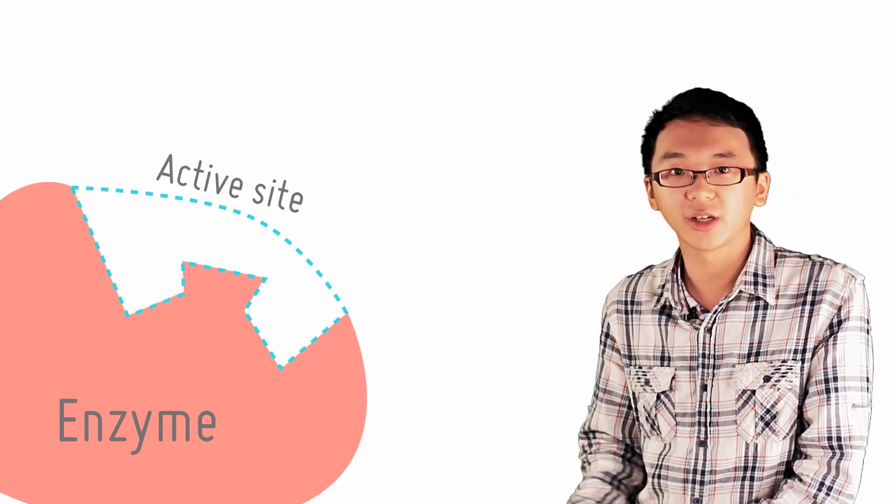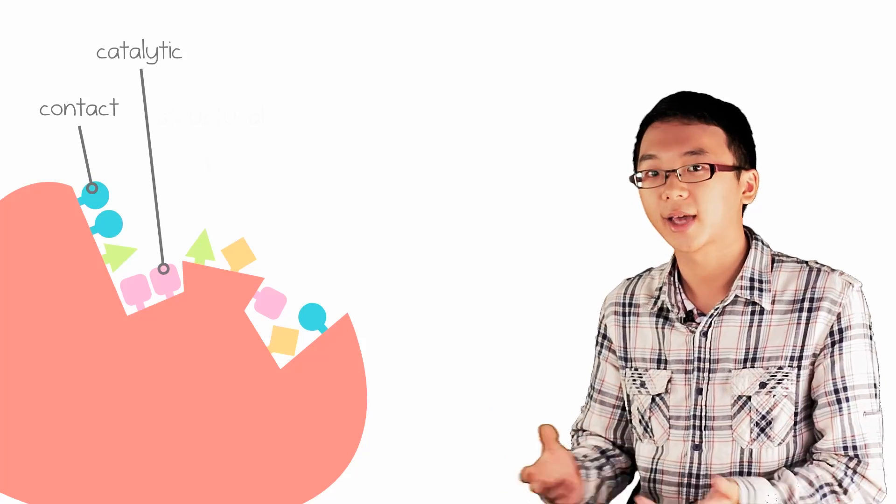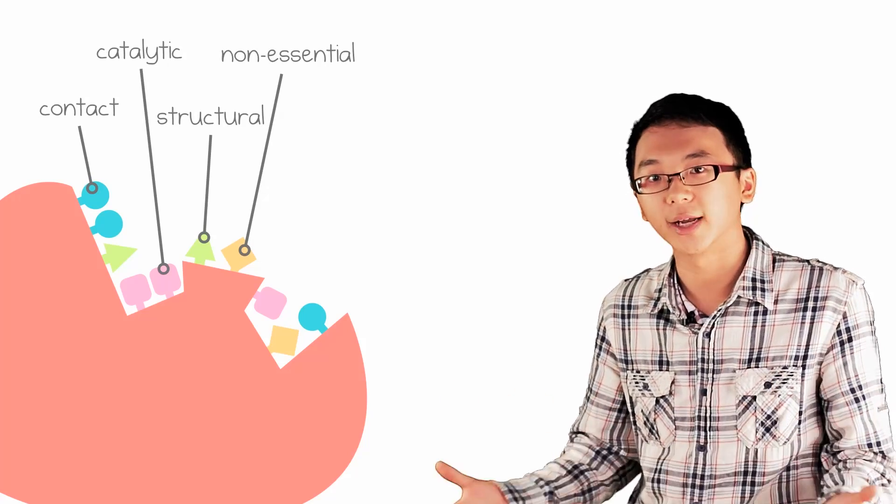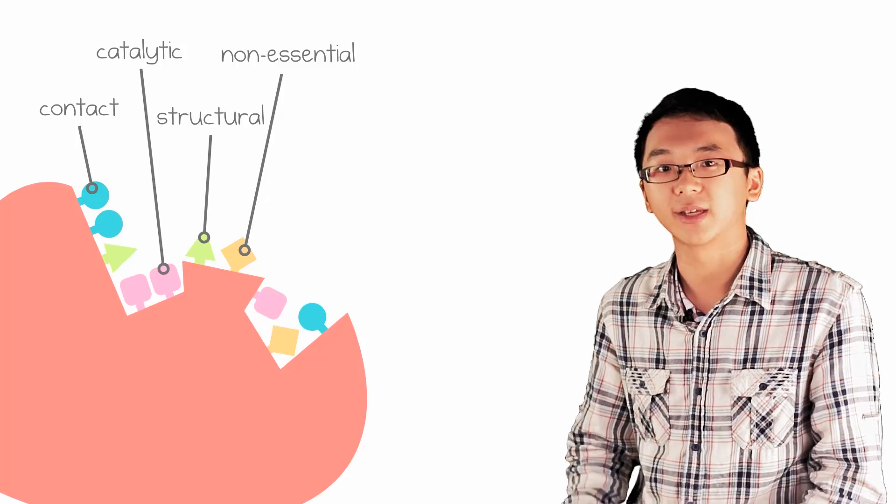Similarly, there are actually four main types of amino acid residues at the active site: the contact, catalytic, structural, and non-essential residues that work together to give the enzyme active site its function.